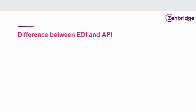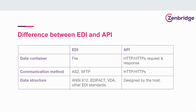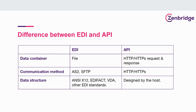Let's look at some of the technical differences between EDI and API. In EDI, you are sending and receiving a document of business data — the data container is an EDI file. In API, you send the data container using an HTTP request and receive an HTTP response. EDI uses AS2 or SFTP communication methods, whereas API uses HTTP or HTTPS.